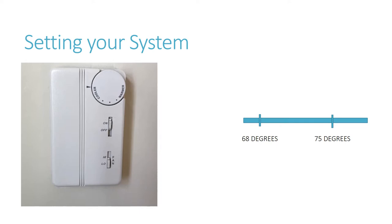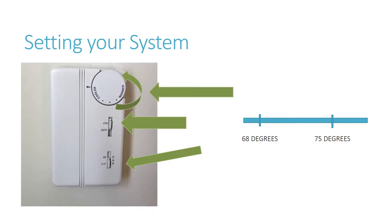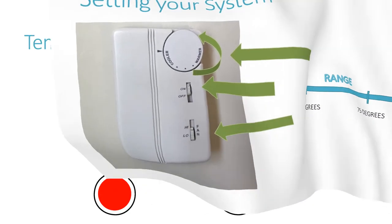To turn on your air, make sure the switch is in the on position. After turning on your unit, you can select a fan speed — high or low — and then adjust the temperature between cool and warm. However, the temperature of the room will remain within a set range of temperatures.